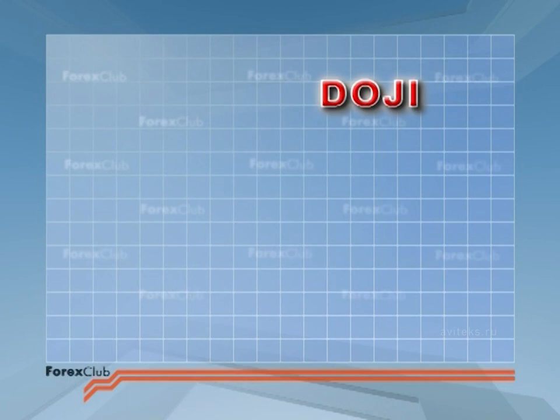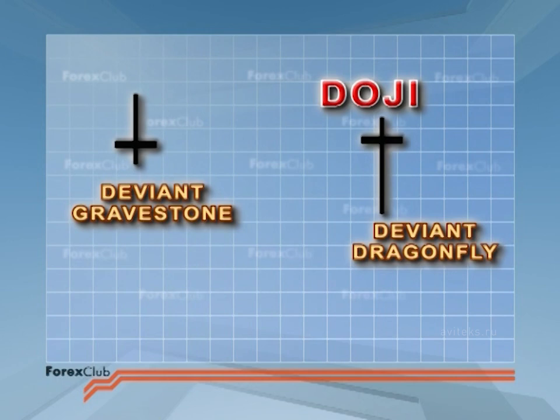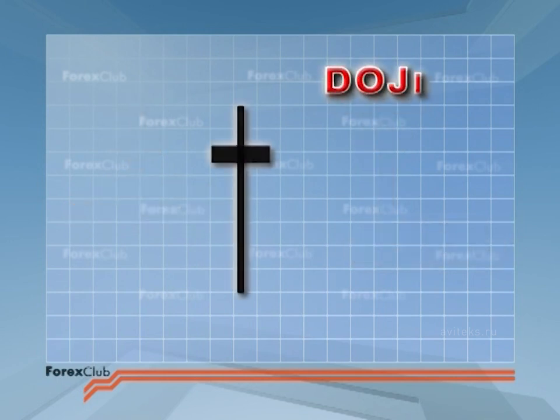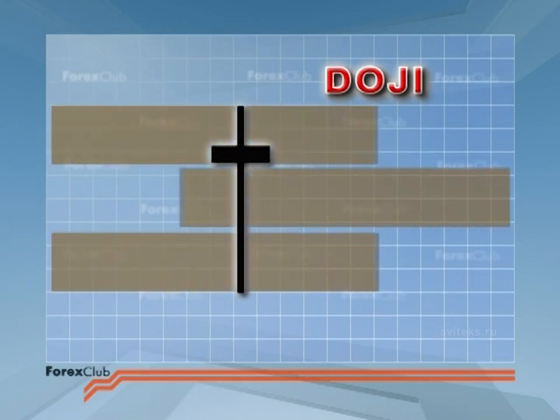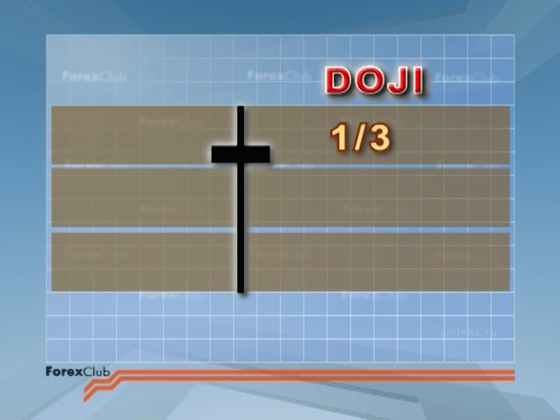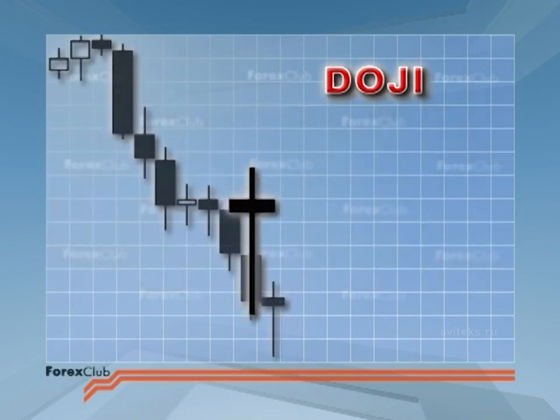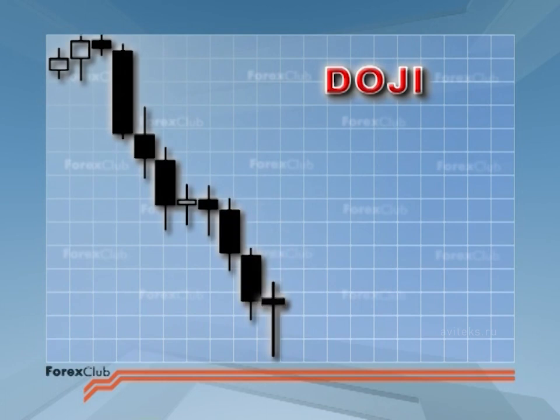Here are the other deviant dojis I mentioned earlier. They are also reversal signals, of course. If the doji crossbar is in the top third of a long candlestick that is at the bottom of the market, it's a signal for the end of the bear trend. It's a deviant dragonfly.